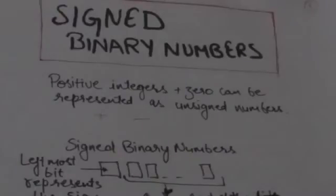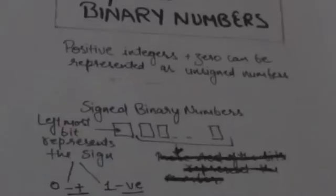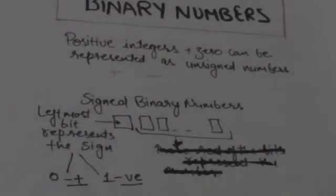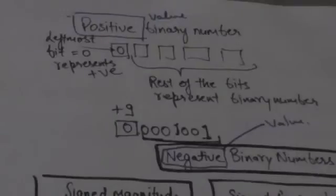A binary number can be signed or unsigned. If a binary number is signed, then its leftmost bit, or the most significant bit, represents the sign. If this bit is zero, then it means this binary number represents a positive value. If this bit is one, then it means this binary number represents a negative value.